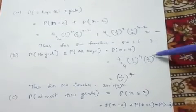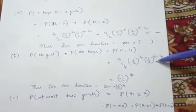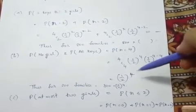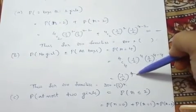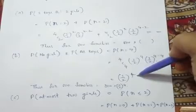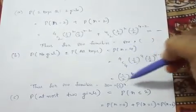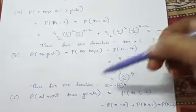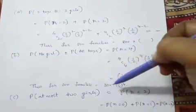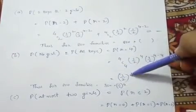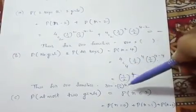1 by 2 power 4, minus 4, this value 1, so finally 1 by 2 whole power 4. This is for one family. Again, for 800 families, multiply this with 800.